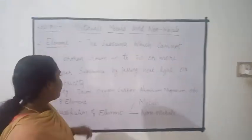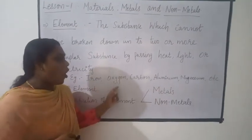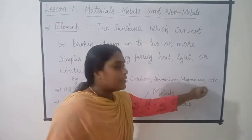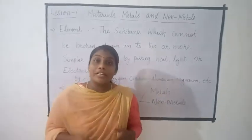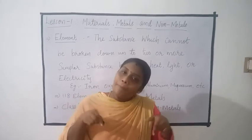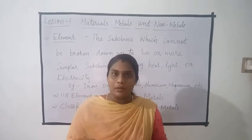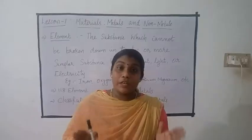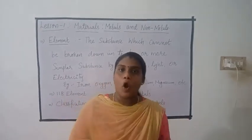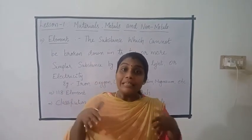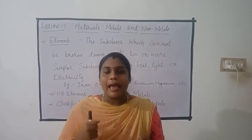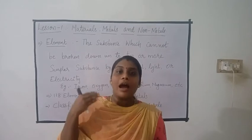The examples for elements are iron, oxygen, carbon, aluminium, magnesium, etc. Students, we have 118 elements in the periodic table. Each element has its own properties. Properties means hardness, softness, strength, and how they react with others.